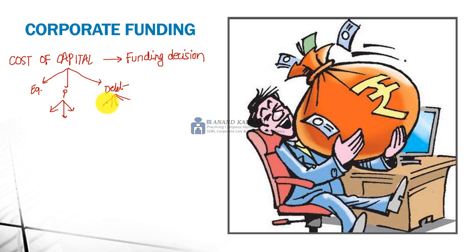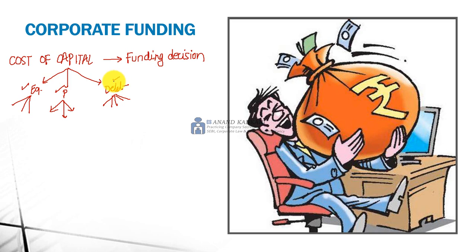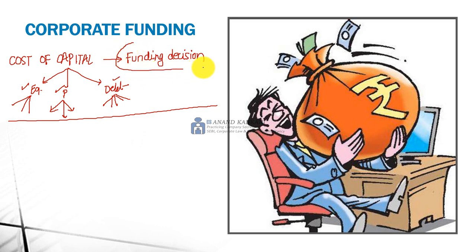Broadly, if you check, you have three options for raising money: equity, preference and debt. This is called the funding decision. Our whole subject deals with the funding decision — from where the funds need to be raised. With Cost of Capital, there was another chapter called Capital Structure. What did we check in Capital Structure? That the valuation of the company should be maximum, the EPS should be maximum, and the MPS should be maximum.